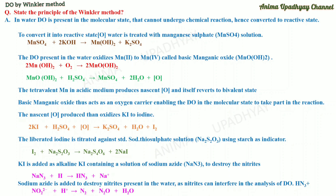The water is treated with manganese sulfate solution, MnSO₄. The D-O present in the water oxidizes the manganese in the manganese sulfate solution to basic manganic oxide, where manganese is in the tetravalent state. This basic manganic oxide acts as an oxygen carrier, enabling the dissolved oxygen to convert it into nascent oxygen in the acidic medium, reverting to the bivalent state of manganese, that is manganese sulfate.